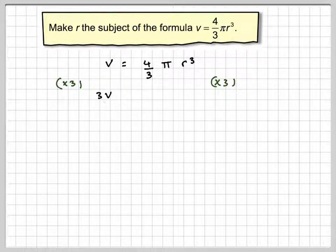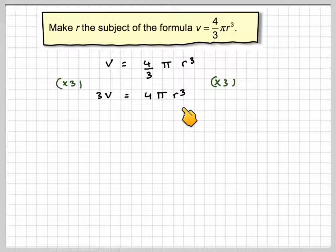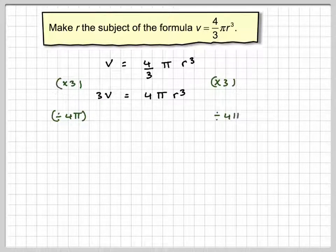So this becomes 3V, and this becomes 4 pi R cubed. R cubed is multiplied by pi and by 4. So the opposite of multiplying by 4 pi is to divide by 4 pi.